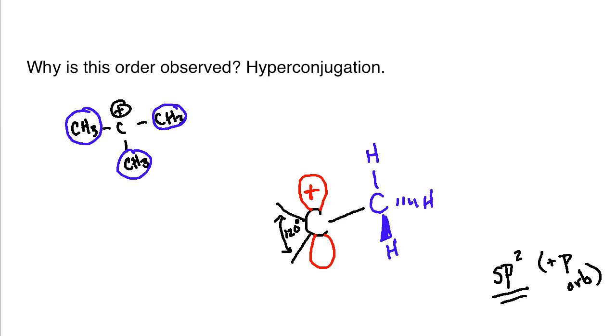And what's important here is you do have free rotation around this bond. But at any time, one of these hydrogens is going to be in alignment with the p orbital. And it is this alignment, the electrons that make up this bond right here, okay, coming into alignment with the empty p orbital,